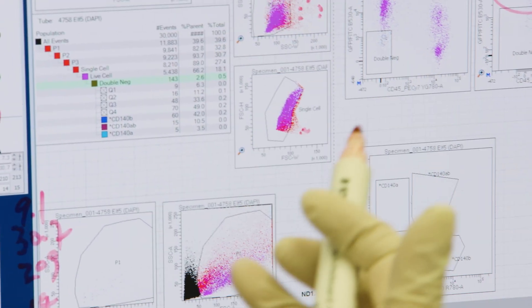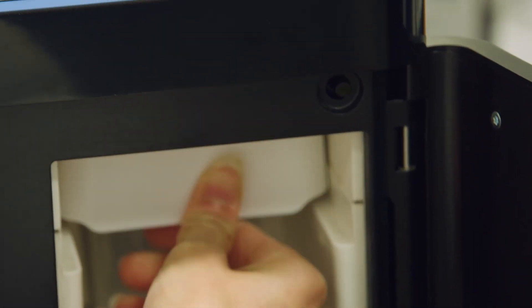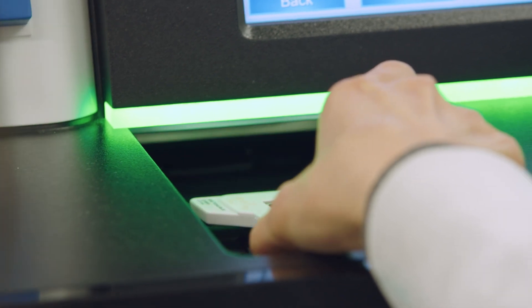When we get sick or when we get a disease, it means that our cells are not functioning as they should be. But finding a way to comprehensively study individual cells has been difficult. That is, until recently, with the development of cellular genomics.